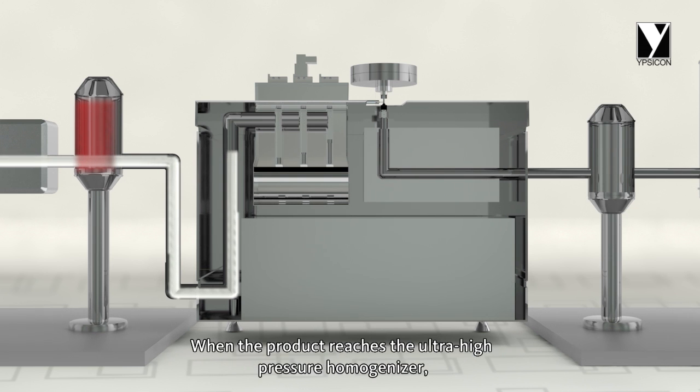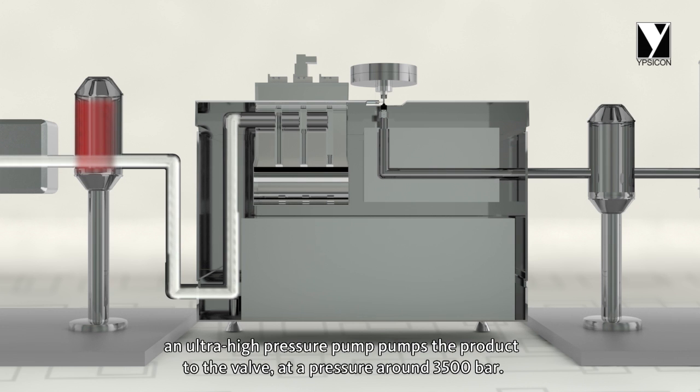When the product reaches the ultra-high pressure homogenizer, an ultra-high pressure pump pumps the product to the valve at a pressure around 3,500 bar.